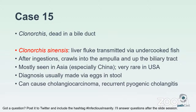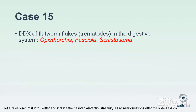The differential for flatworm flukes (trematodes) really is Opisthorchis in addition to Clonorchis sinensis, Fasciola hepatica, and schistosoma — we usually see the eggs of schistosoma but you can rarely see worms as well. In the liver, schistosomiasis compared to the luminal GI tract really requires hunting; you might see one or two eggs on multiple serial sections.